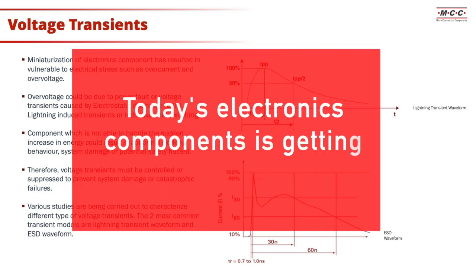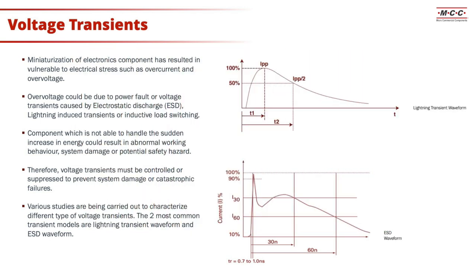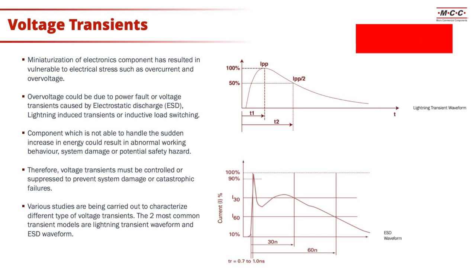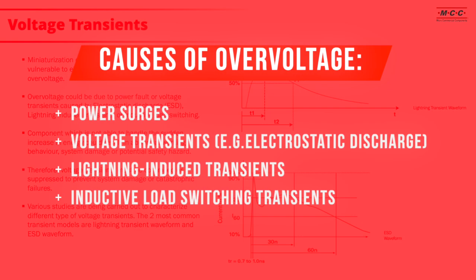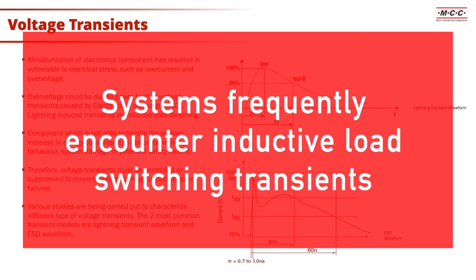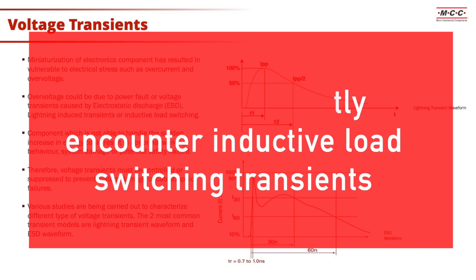Today's electronics components are getting smaller and smaller, making them vulnerable to electrical stress such as overcurrent and overvoltage. Overvoltage could be due to power fault or voltage transients caused by electrostatic discharge, lightning-induced transients, or inductive load switching. Looking at today's technologies and systems, most of the time we are subjected to inductive load switchings.